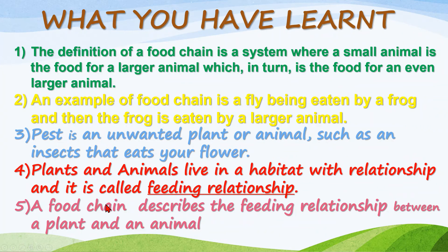These are short summary notes. A small animal is eaten by a larger animal, and then that larger animal is eaten by an even larger animal. A pest is an unwanted plant or animal that eats away your flowers or plants. Plants and animals live together in a habitat, which is known as a feeding relationship, and a food chain describes that feeding relationship between a plant and an animal.